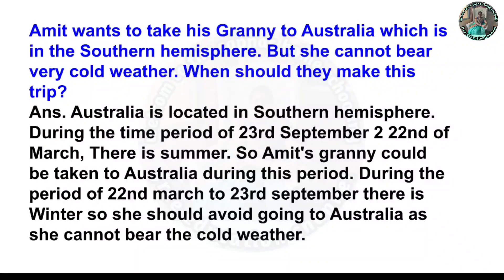Australia is located in the Southern Hemisphere. During the time period of 23rd September to 22nd March, there is summer in Australia, so Amit's granny could be taken to Australia during this period. During the period of 22nd March to 23rd September there is winter, so she should avoid going to Australia as she cannot bear the cold weather.